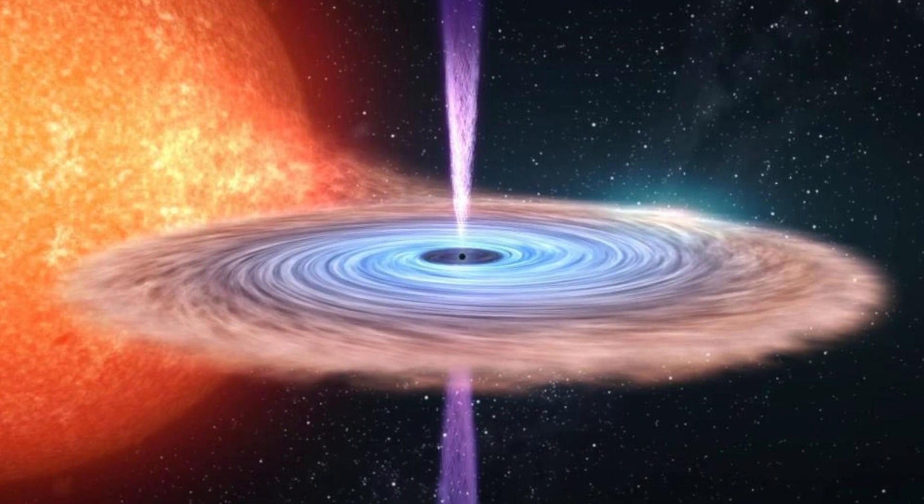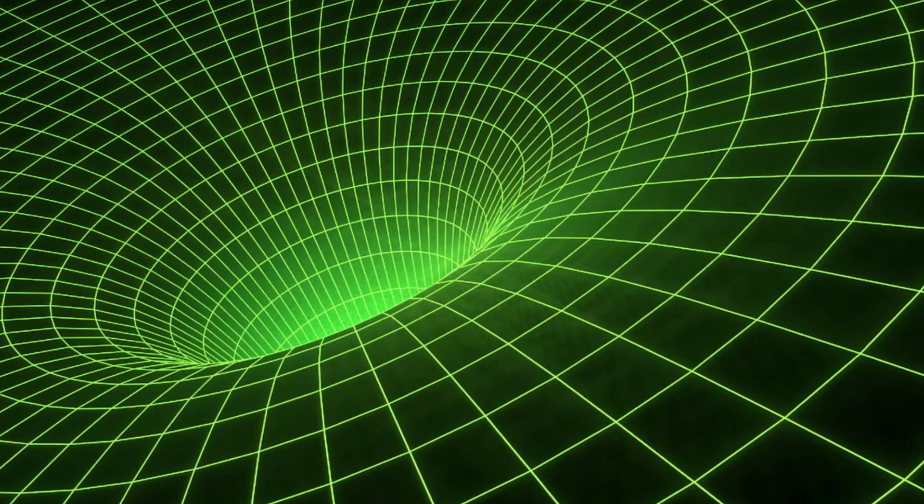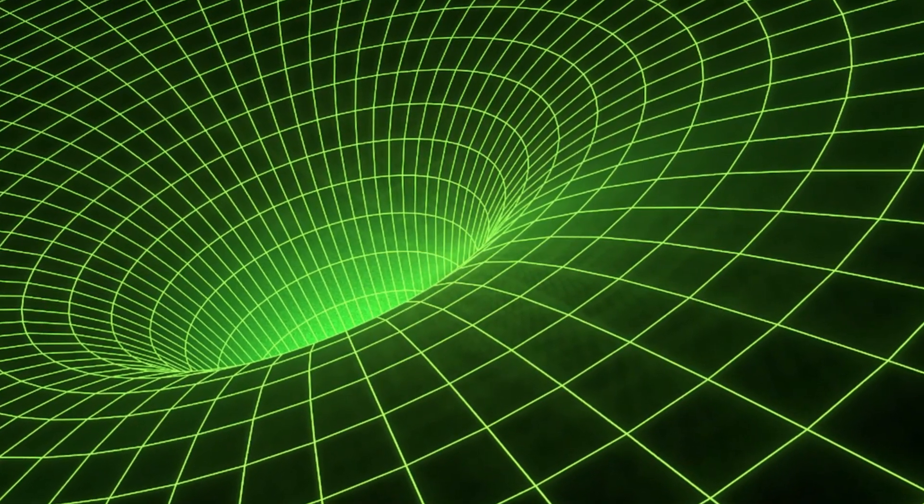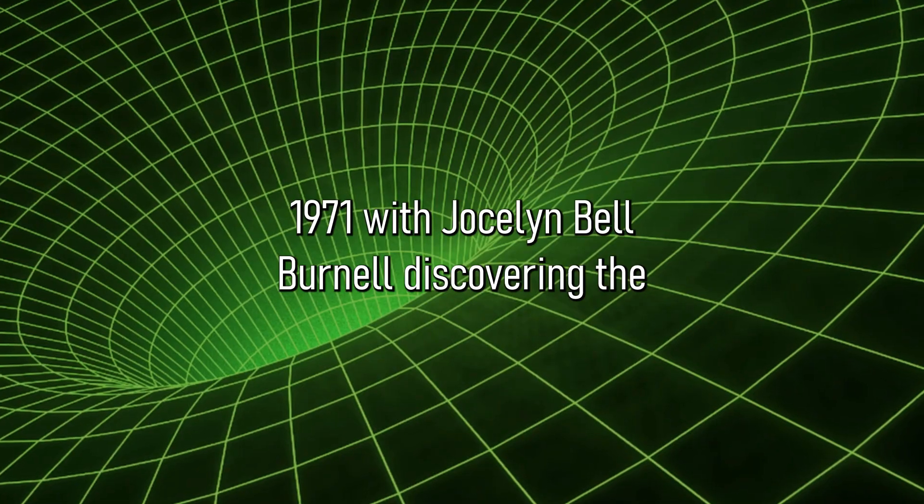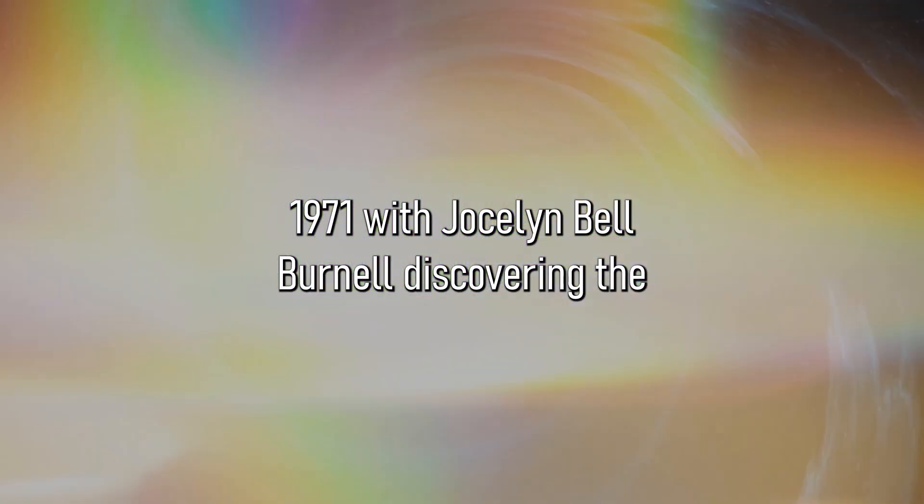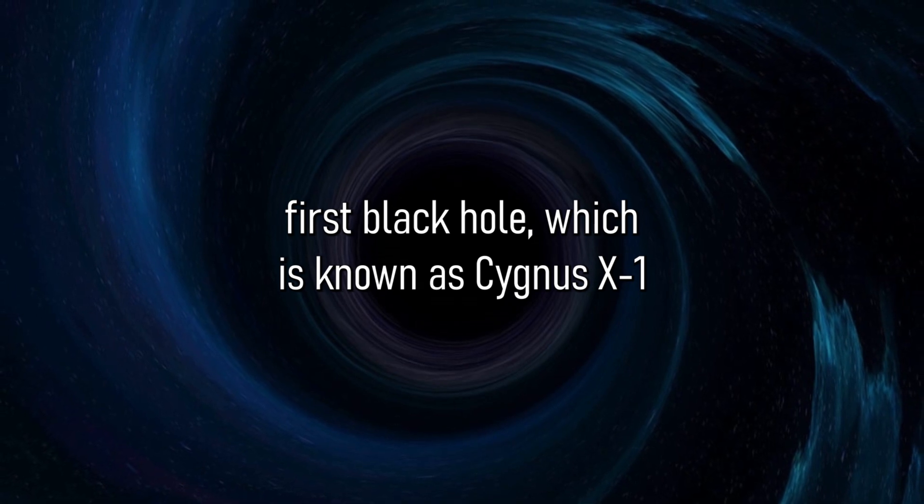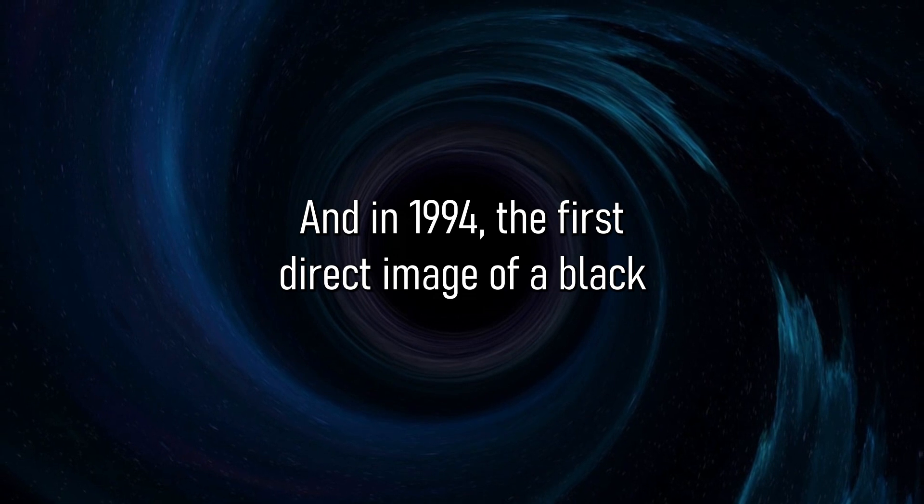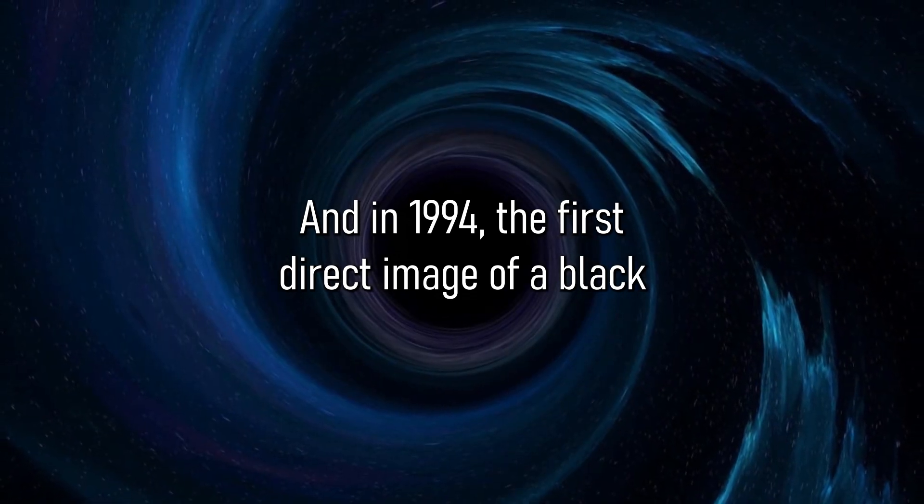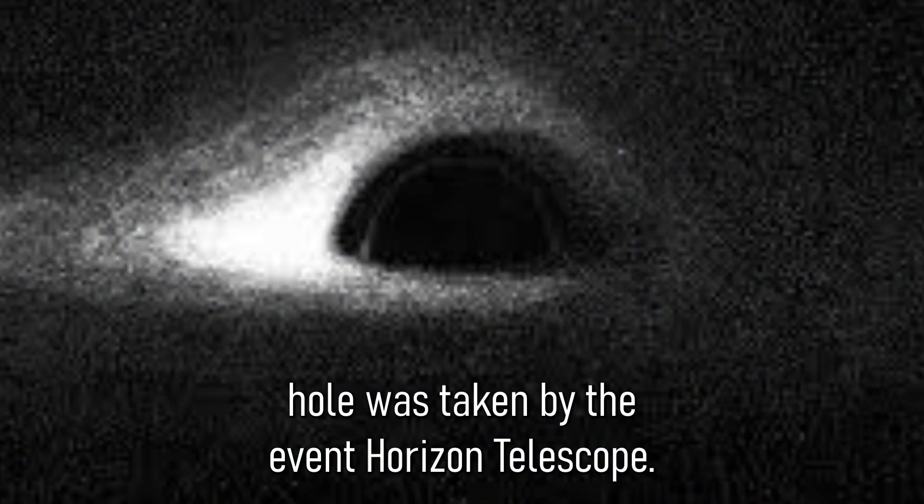In 1939, Robert Oppenheimer and his team calculated that black holes can form from the collapse of massive stars. The whole thing took a different turn in 1971, with Jocelyn Bell Burnell discovering the first black hole, which is known as Cygnus X-1. And in 1994, the first direct image of a black hole was taken by the Event Horizon Telescope.